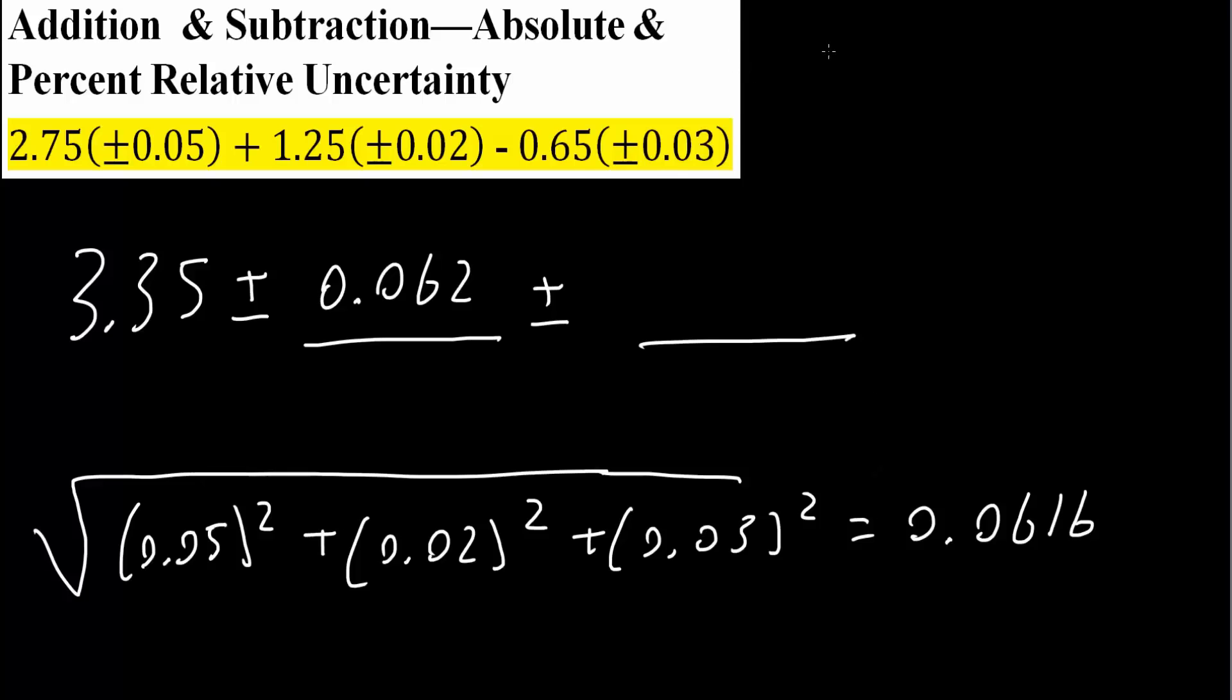What the answer would be for percent relative uncertainty would be 0.0616, what we got for the absolute uncertainty, divided by this number right here, the number that resulted from 2.75 plus 1.25 minus 0.65, which was 3.35, and then we multiply by 100%. We would get 1.84%.